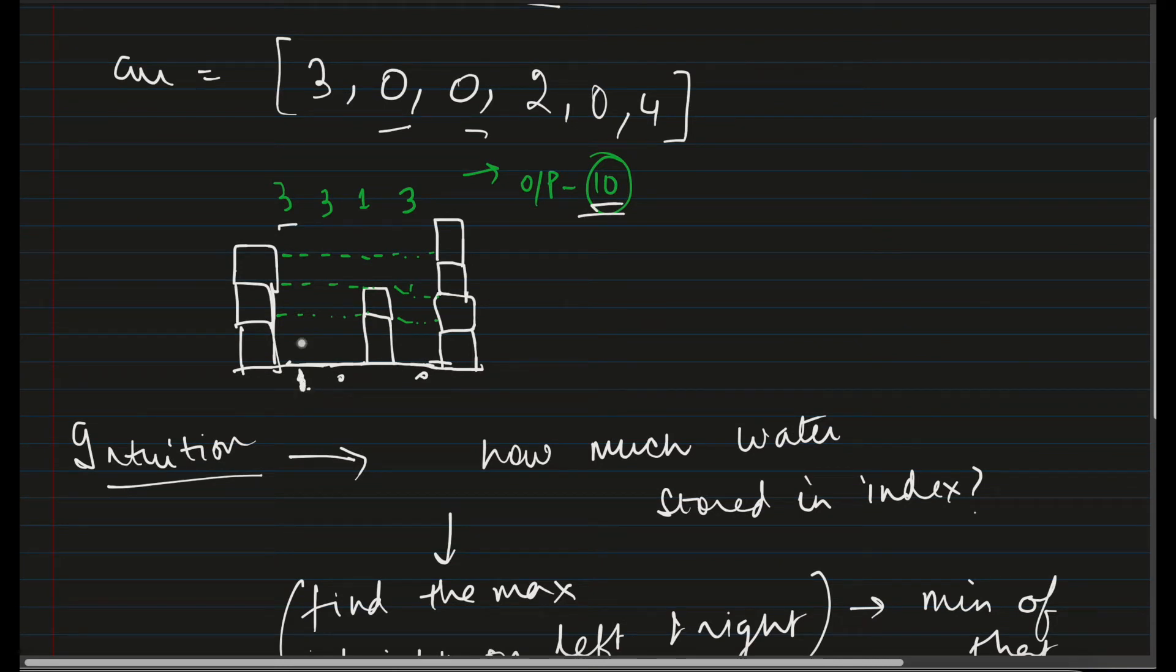So this was one instance where we have three units of water. Now let's come to this block, which is of height 2. Here, left hand side, the maximum height is also 3. Here also same thing. On the right hand side, the maximum height is 4. What is the minimum of this? 3. But going by that logic, even here, three blocks of water should be stored. But it is not the case. Here we have only one.